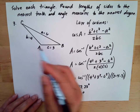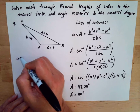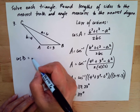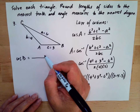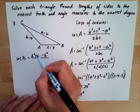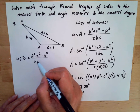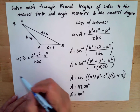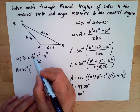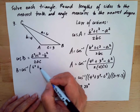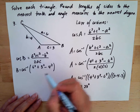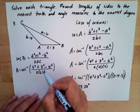We still have two angles to solve, so let's do angle B. Using the same strategy, cosine of angle B equals A squared plus C squared minus B squared, all over twice of AC. So angle B is the inverse cosine of (6 squared plus 3 squared minus 4 squared) over (twice of 6 and 3).